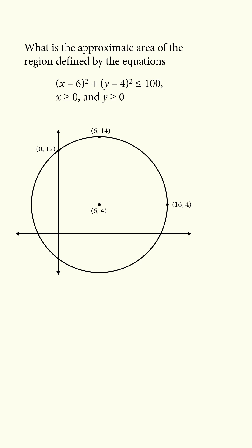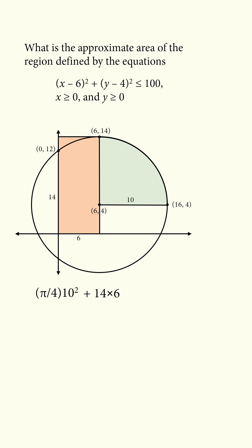To work this out, we'll break the areas into areas that we can calculate easily. We have a quarter circle with a radius equal to 10, so that'll be pi over 4 multiplied by 10 squared. Here we have a rectangle with dimensions of 14 and 6, so its area is 14 times 6, and here we have a rectangle with dimensions of 10 and 4, so its area is 10 times 4.